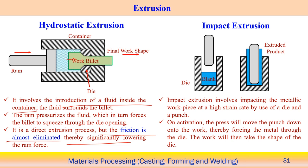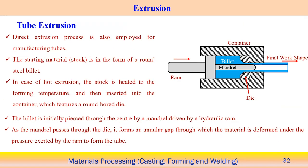In impact extrusion, a metallic component is impacted using a die and punch assembly, resulting in high strain rate deformation. The punch makes an impact load on the blank, causing the material to flow out through the gap between the die and punch, producing the extruded product. Hollow-type products can be developed using the impact extrusion process.